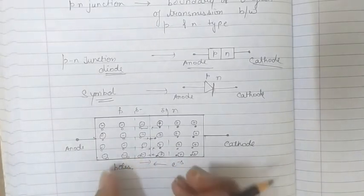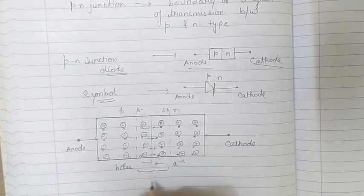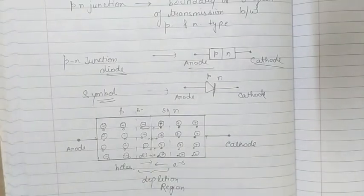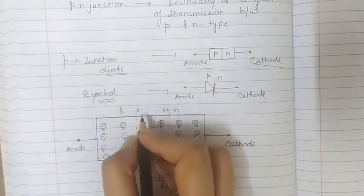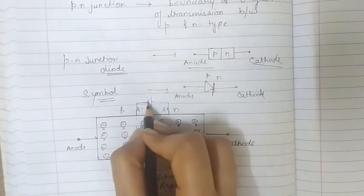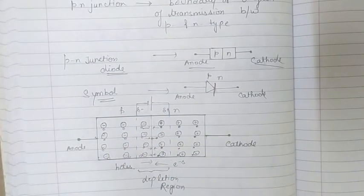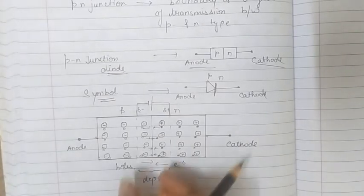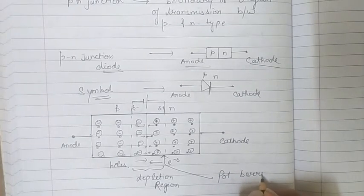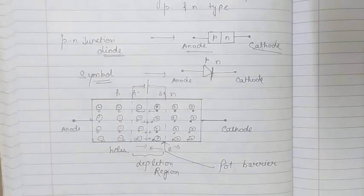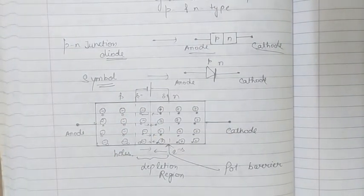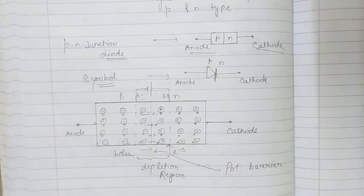This neutral region stops the diffusion of charge carriers and we call it the depletion region — because the charge carriers in this region get depleted. The setup of this negative and positive charge can be considered as a fictitious battery connected to it, preventing the flow of charge carriers across this barrier. A potential difference is set up across this junction and it acts as a barrier — called the potential barrier or junction barrier. The current that flows during diffusion is called the diffusion current.